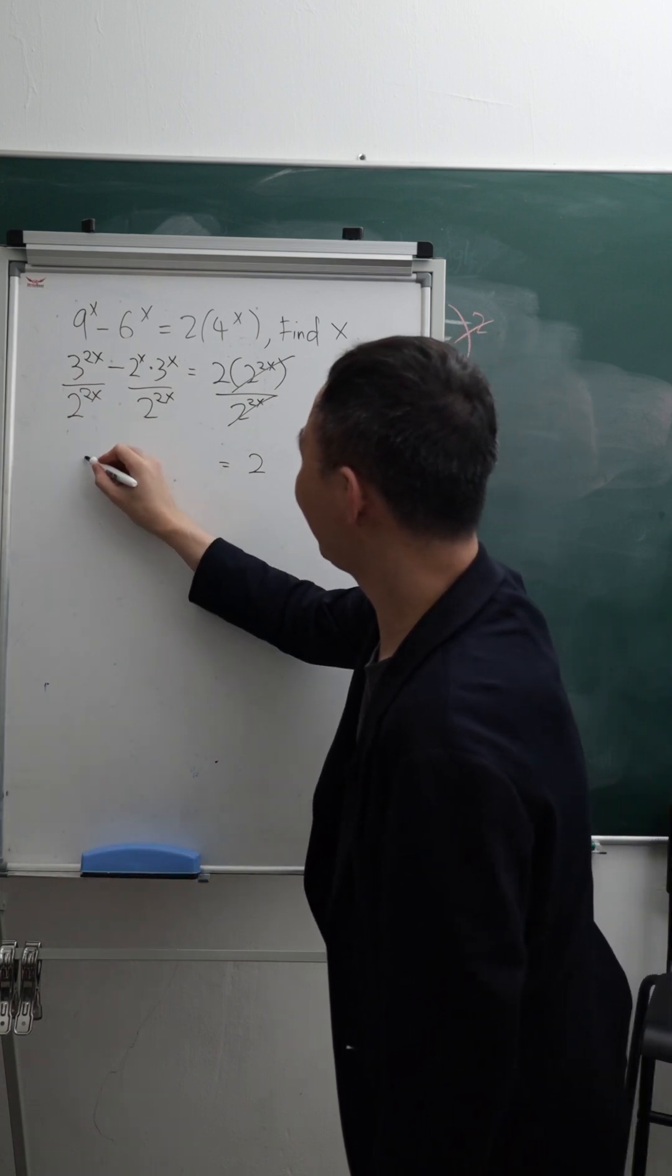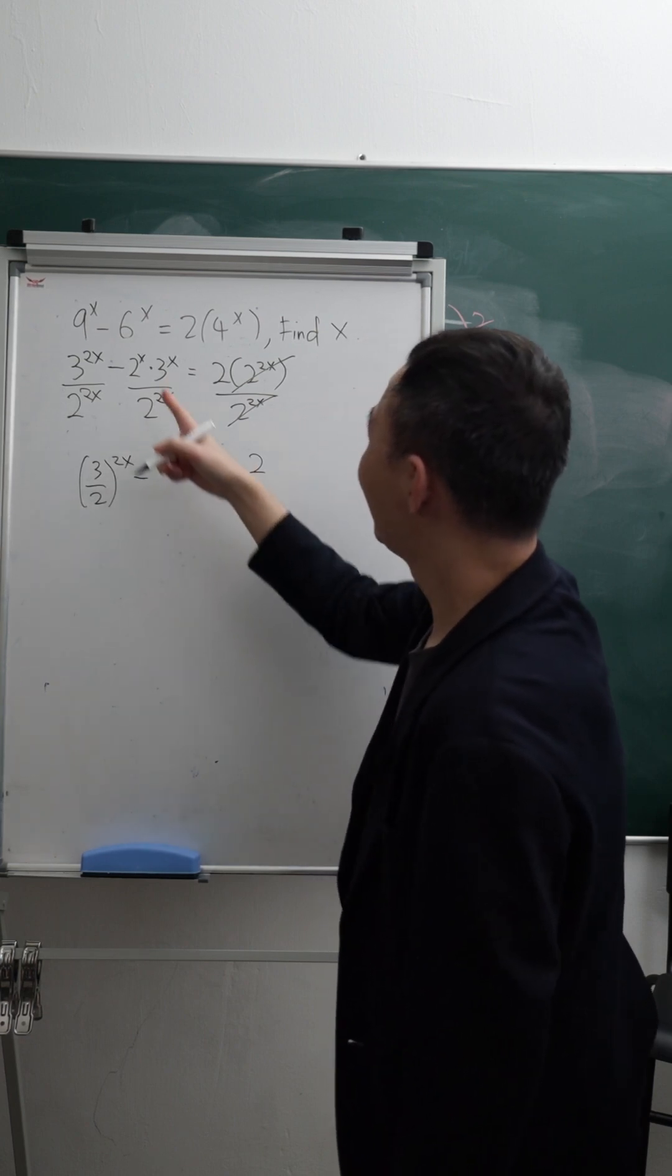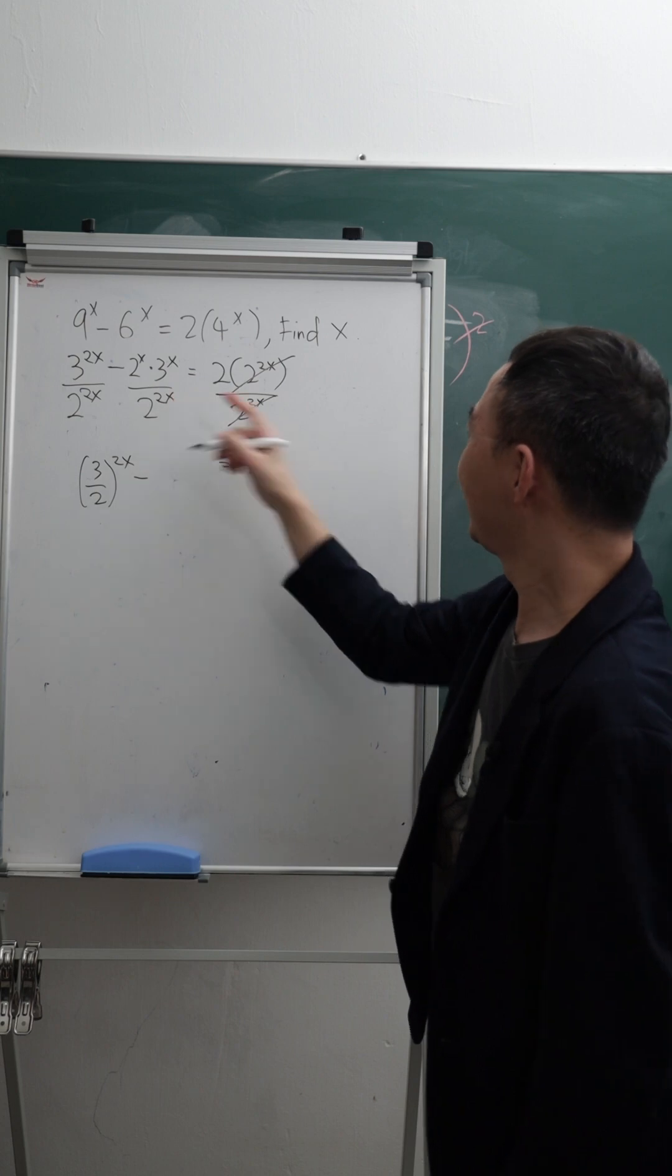So I think I can say this is 3 over 2 power of 2x minus this is 3 power of 2x.